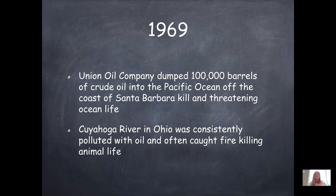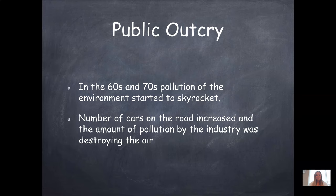Along with a river in Ohio that was consistently polluted with oil and often catching fire, also killing animal life in the river — both instances were huge red flags. They led to working more on regulations and getting laws in place so that companies and people couldn't do this anymore, or they would be fined or face some consequence for how they were treating the environment.